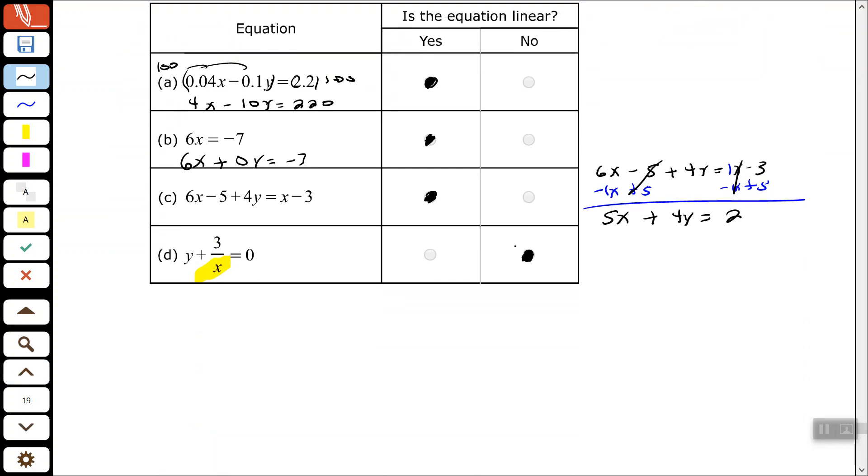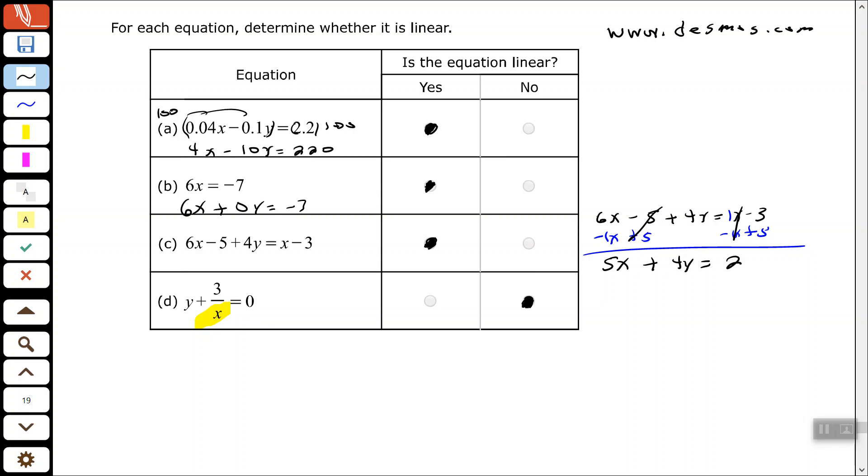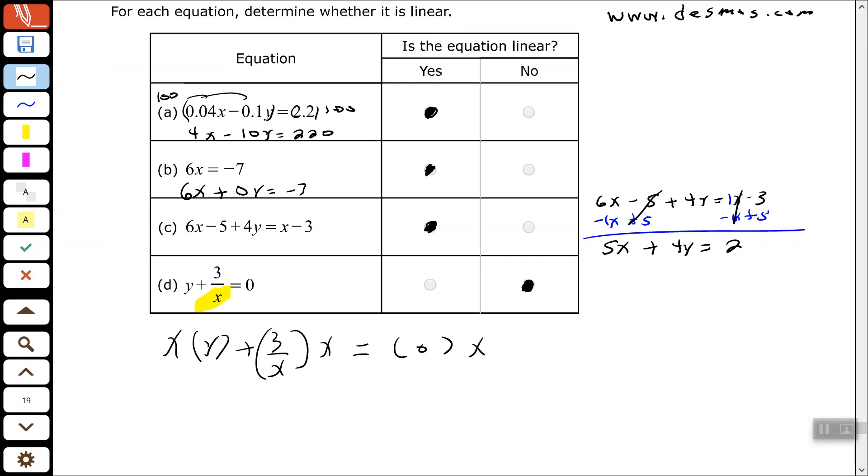So, this y plus 3 over x, what if we clear the denominator there? Our least common multiple of our denominator is x. So, I'm going to multiply using my distributive property, everything by x to clear out my fraction, clear out my denominator.